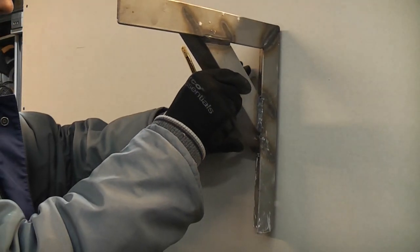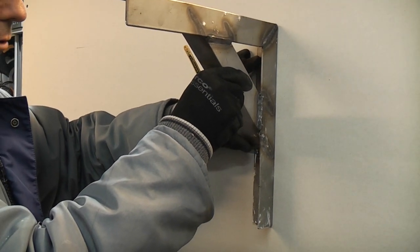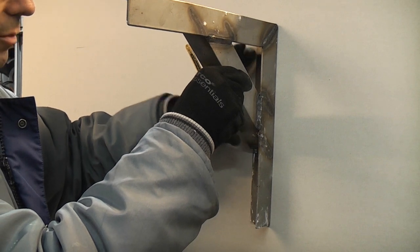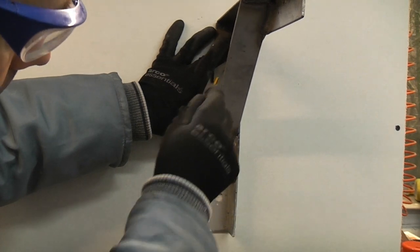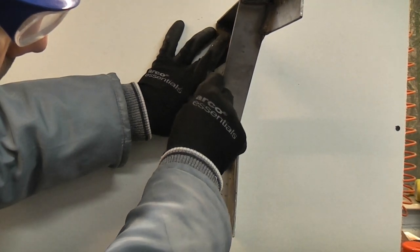I'm going to start off by taking the bracket that we're going to fix. I'm going to put that in the correct position, and I have marked the plasterboard already—this is just a mock-up partition that I've put up in the garage. I'm going to mark the two fixing holes.